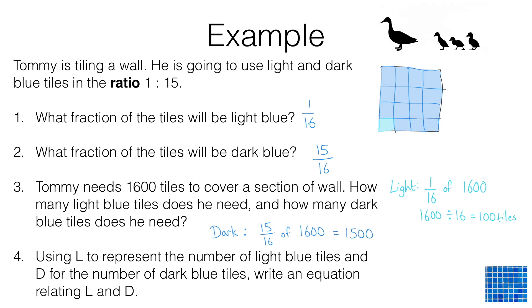Now you could have taken a shortcut and got this answer straight away as soon as you'd worked out the number of light blue tiles. Because if you know that 100 of these 1600 tiles are going to be light blue, the remaining 1500 tiles have to be dark blue. So well done if you spotted that shortcut.